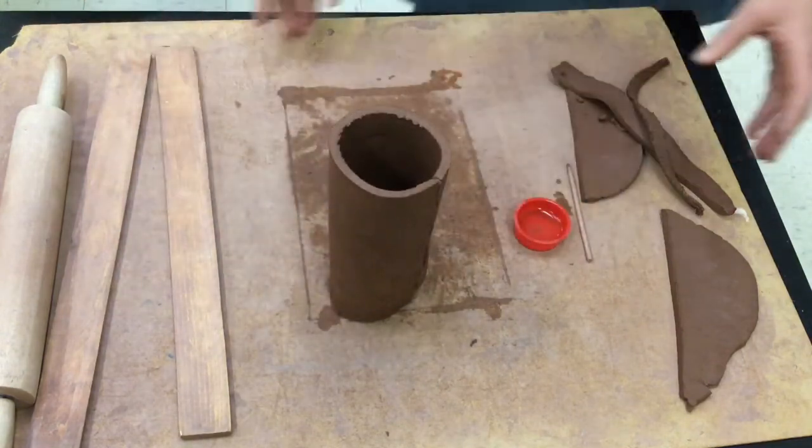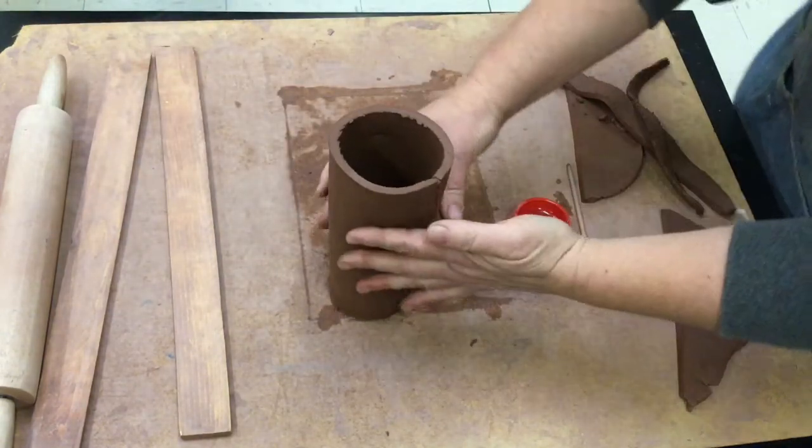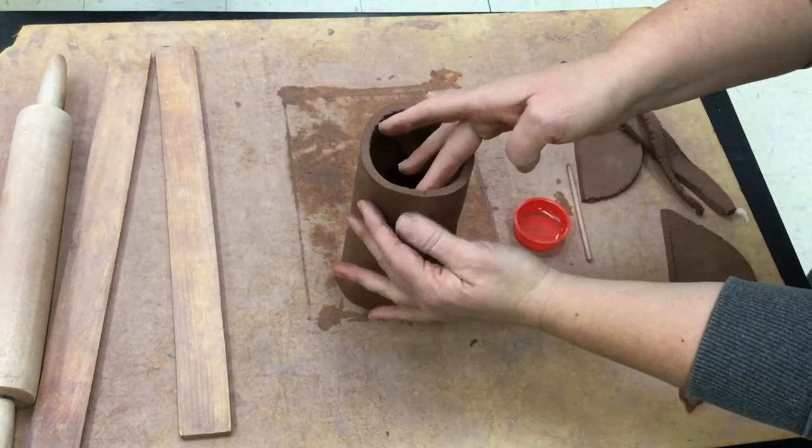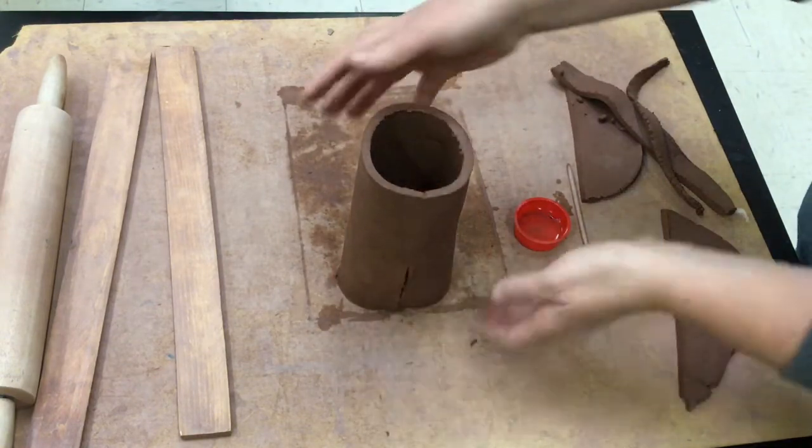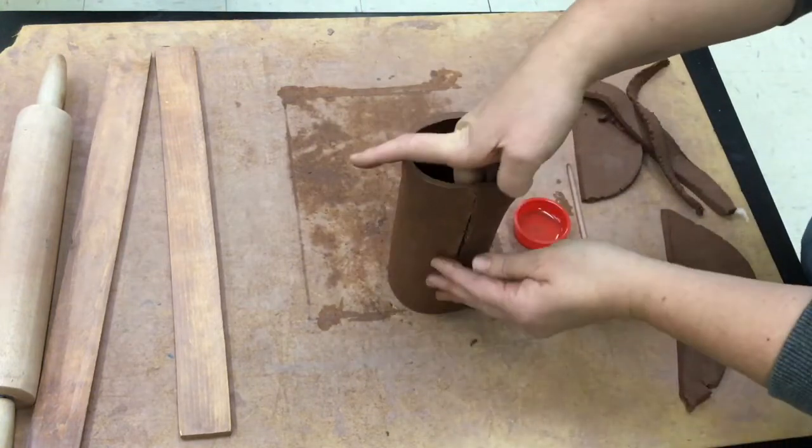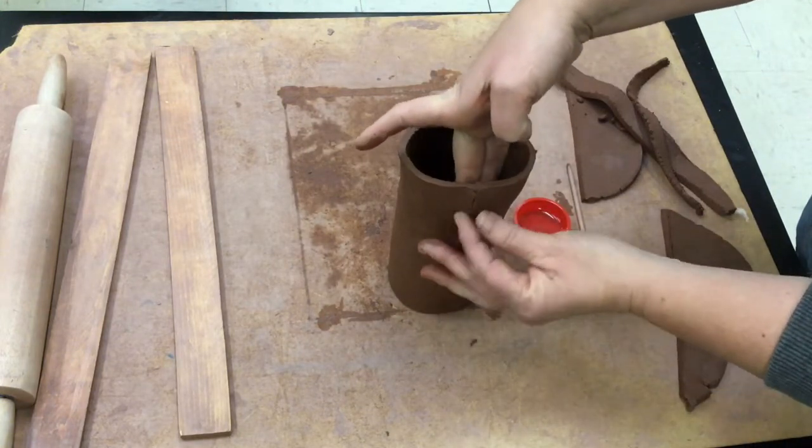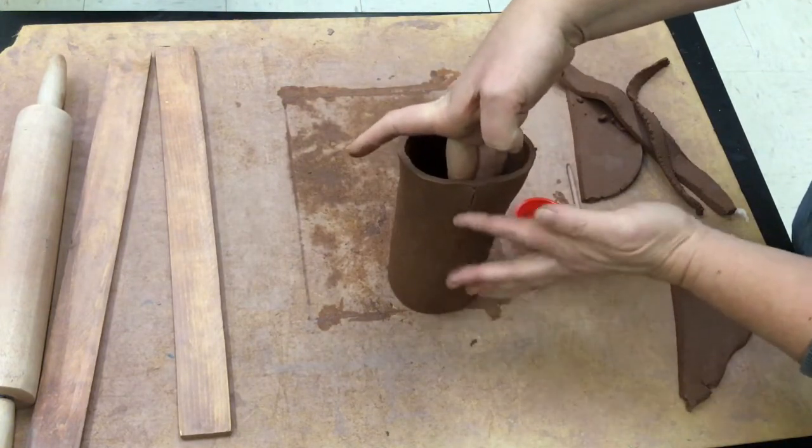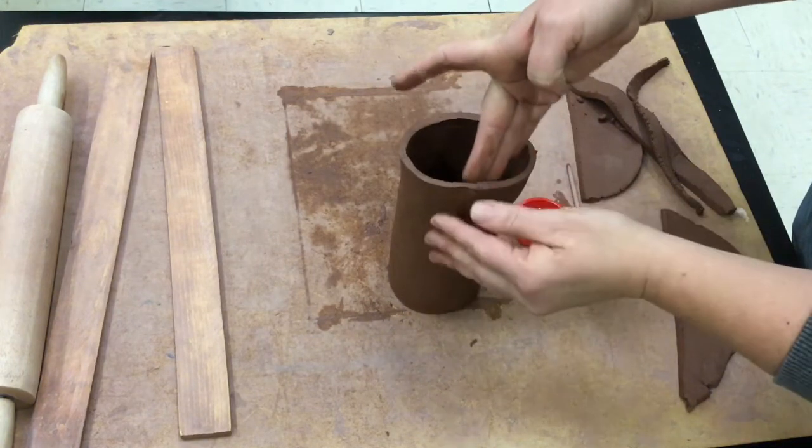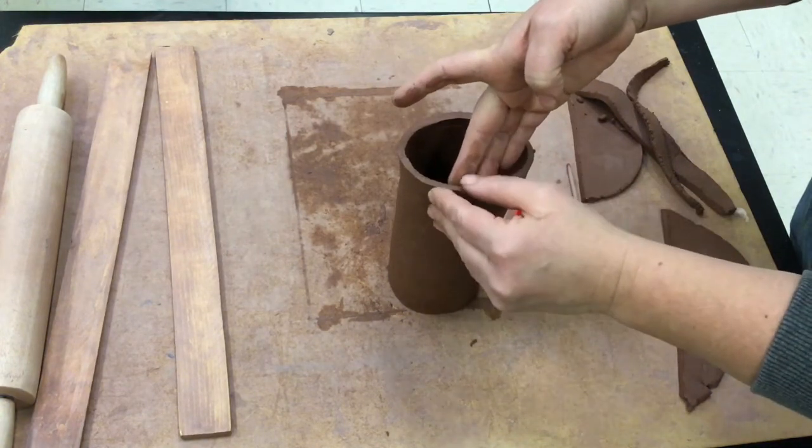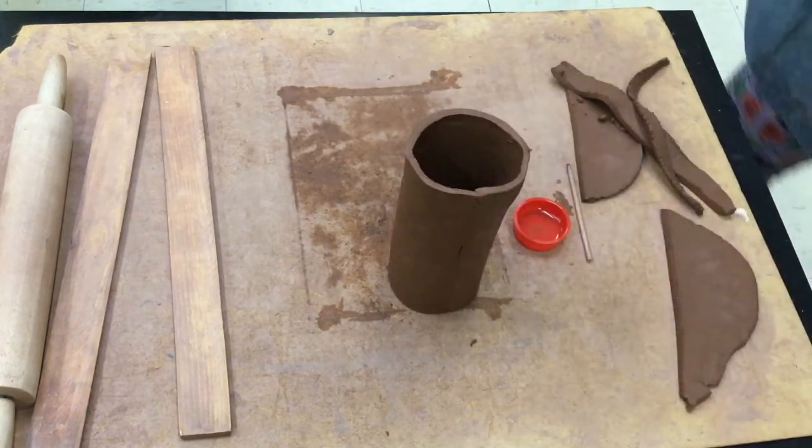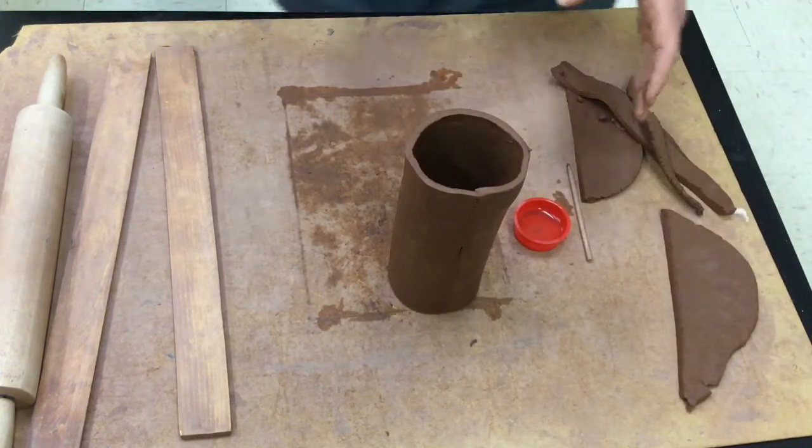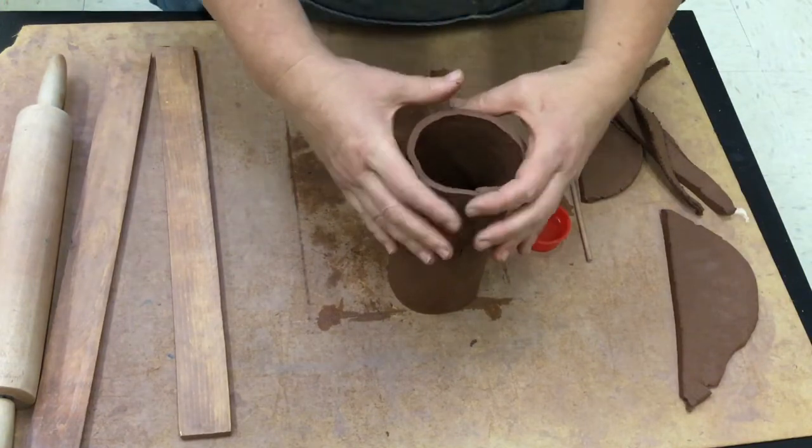Now I'm not going to spend a whole lot of time smoothing this seam. I'll just go through it slightly. I'm not hardly pressing at all. One of the biggest mistakes that happens is kids overwork the seam at this point when the clay is really soft and that makes it get all funky. It gets really thin and then it stretches it out. I can always go back and work on my seam later.